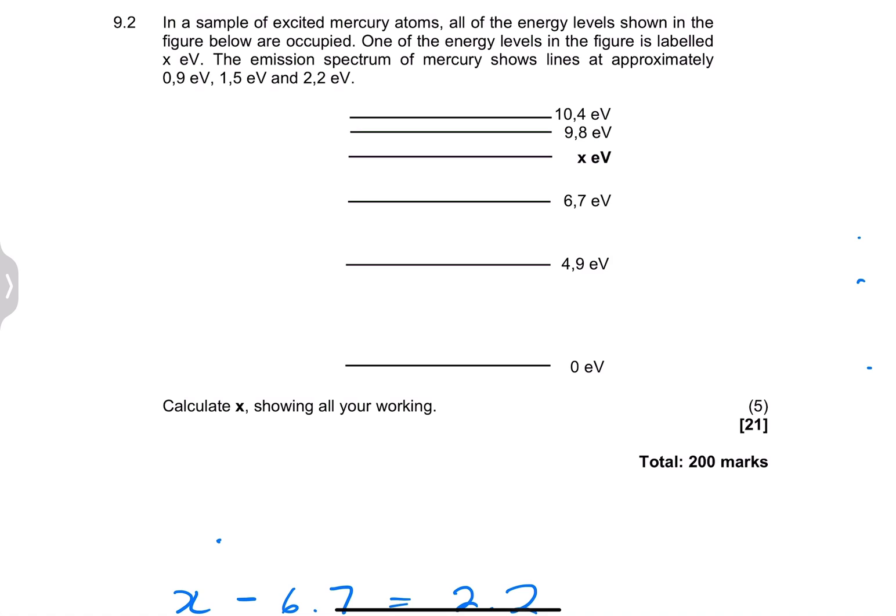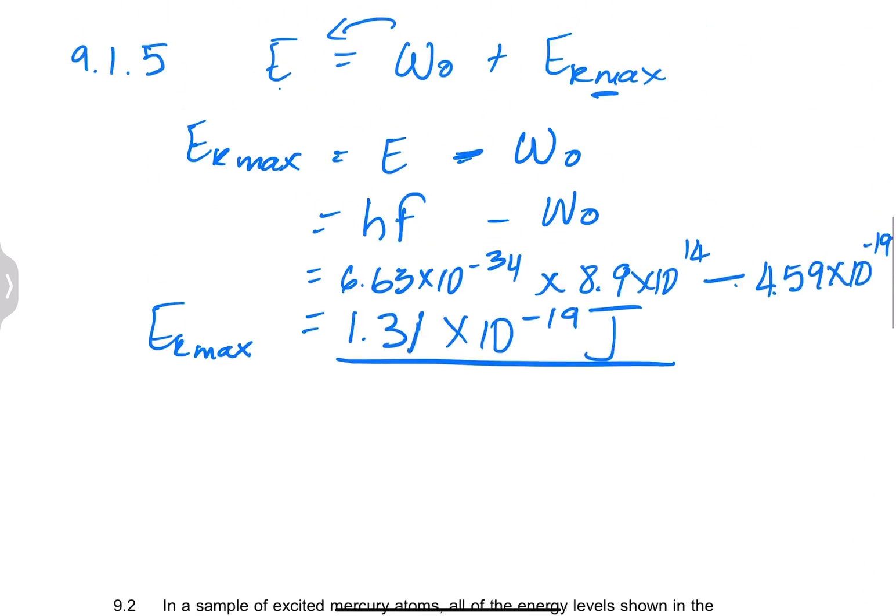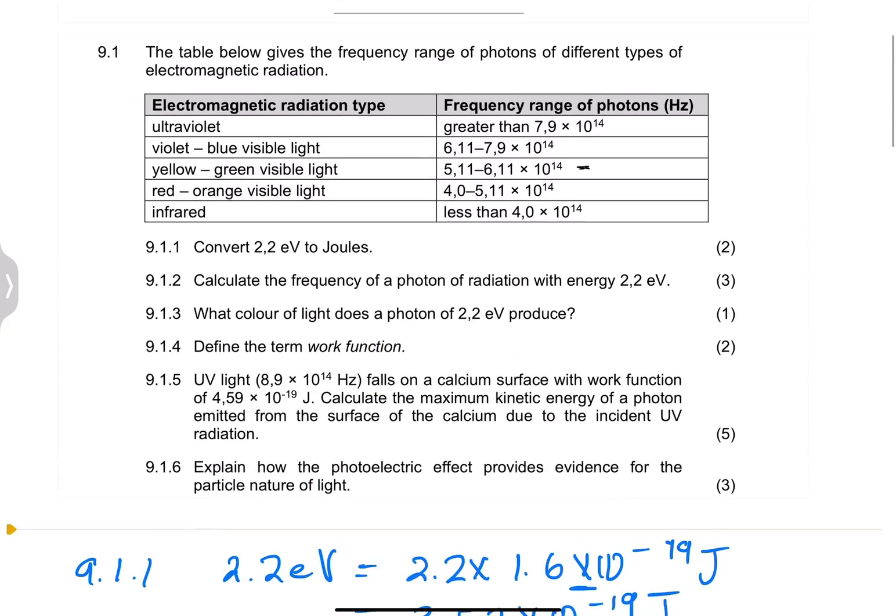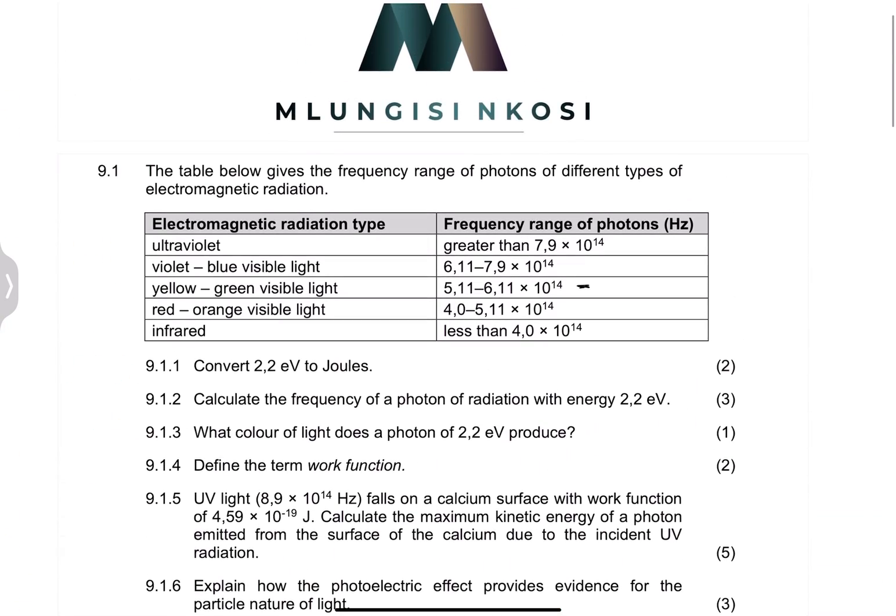Please remember that line emission spectrum in this case, that difference between the lines would give us the difference in energy. Whether it's an emission spectrum, you take the topmost minus the one below. But if it's an absorption spectrum, you would take from the bottom to the top. I want to leave it there, ladies and gents. I hope that you were able to really understand this question. I will see you guys again next time.